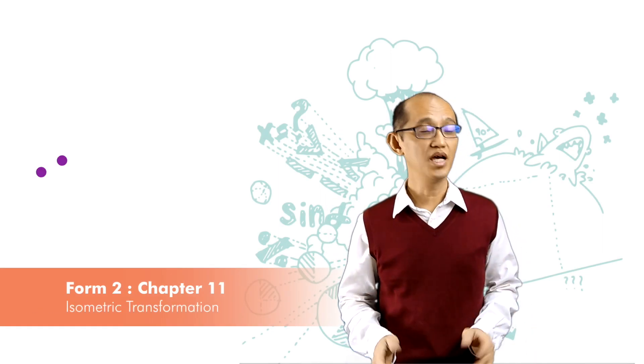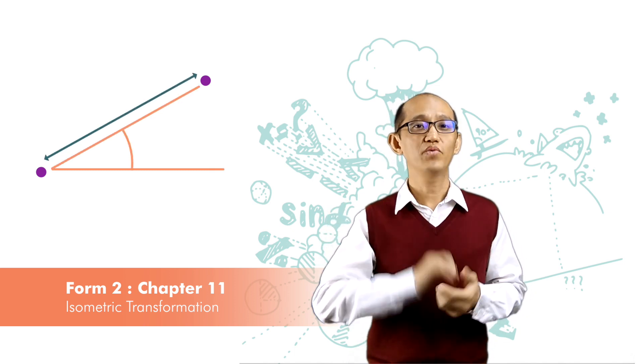Earlier on, we say that we can describe a translation by giving its angle and the distance. Or we can use the vector method, where the motion is broken down into the horizontal component and the vertical component.